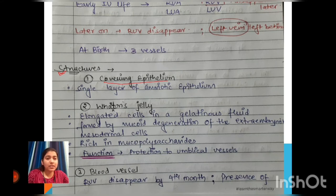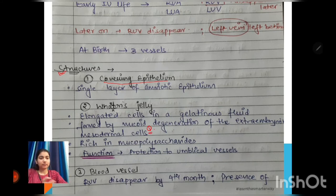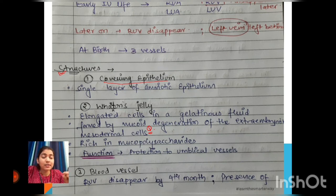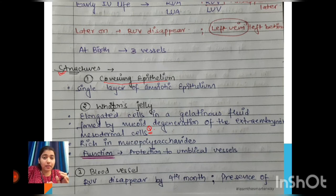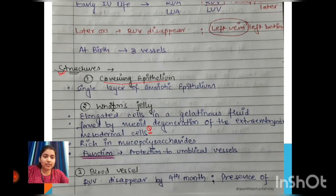Wharton's jelly is formed by the mucoid degeneration of extra-embryonic mesodermal cells. It is rich in mucopolysaccharides. Its main function is to provide protection to the umbilical blood vessels.